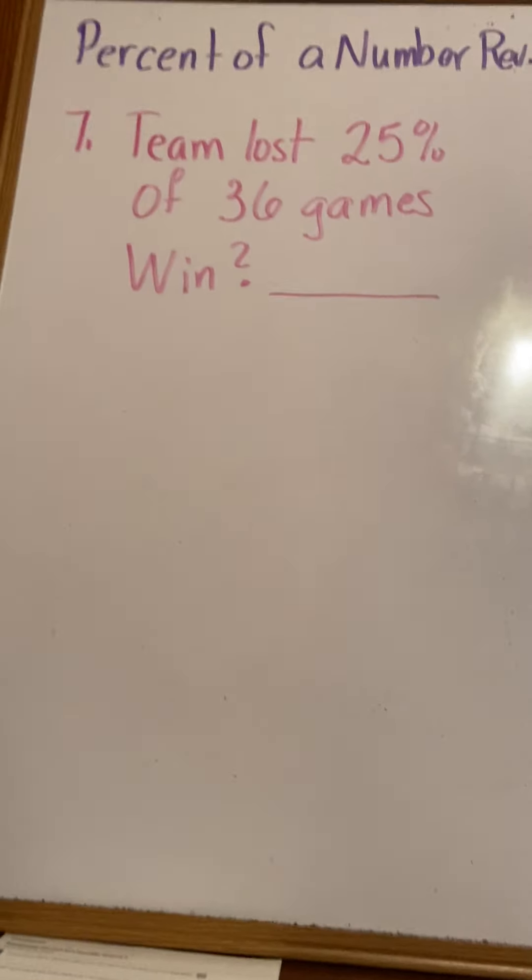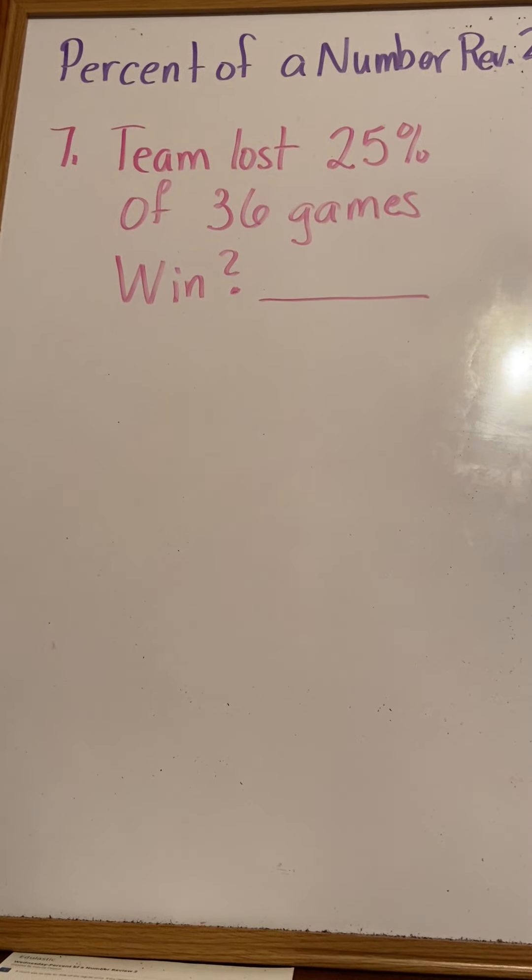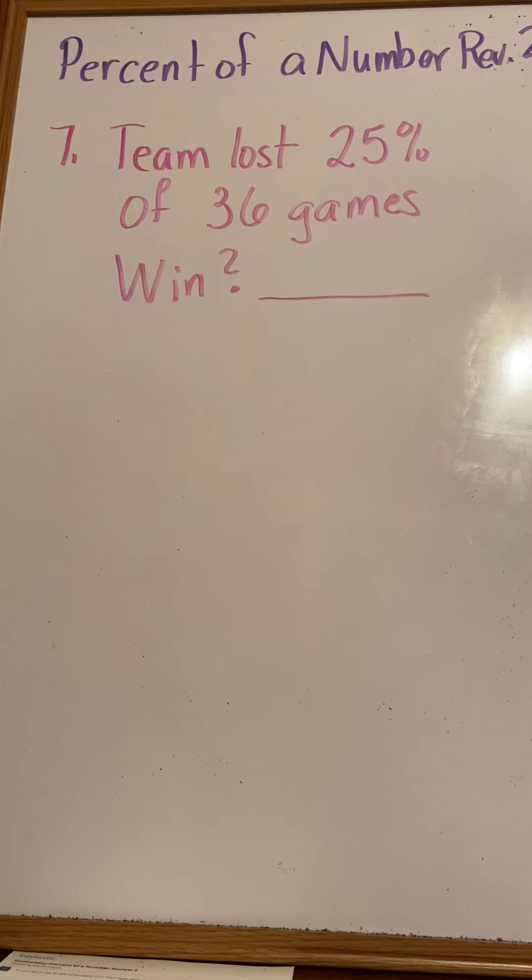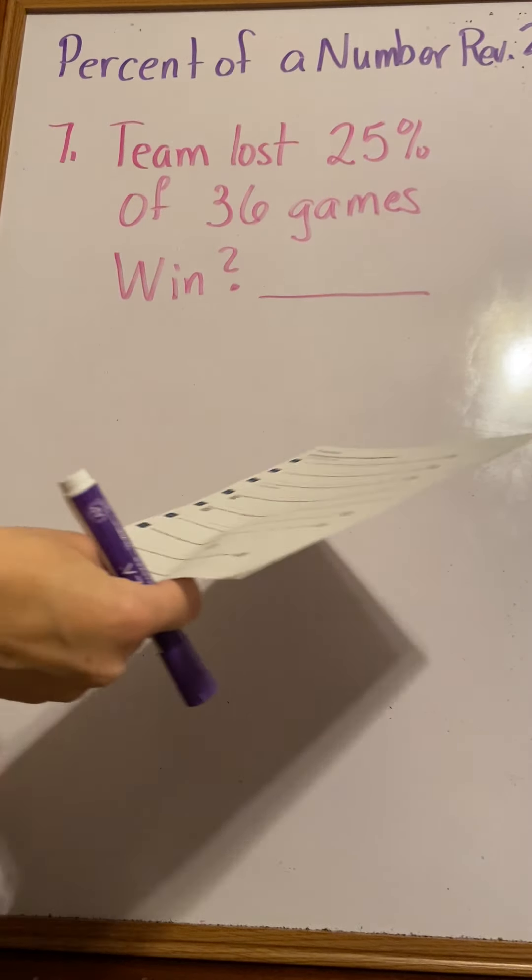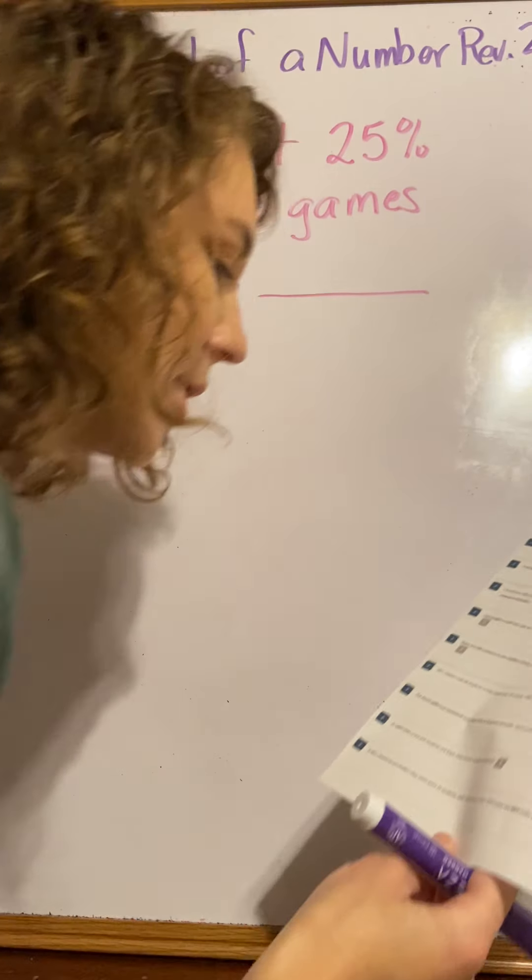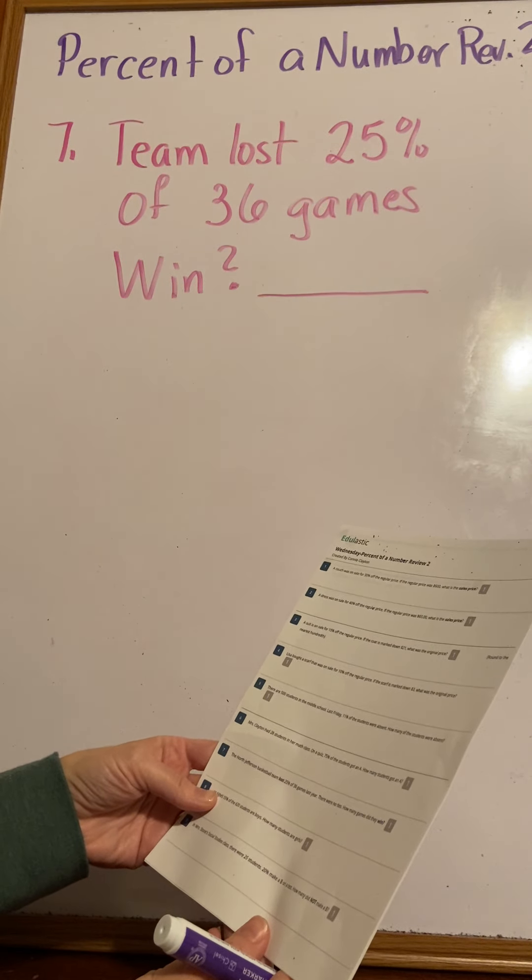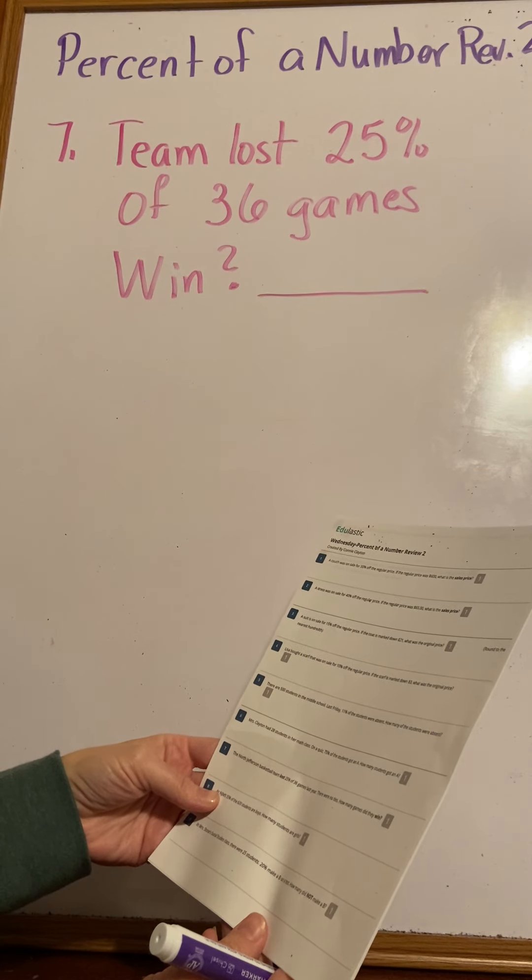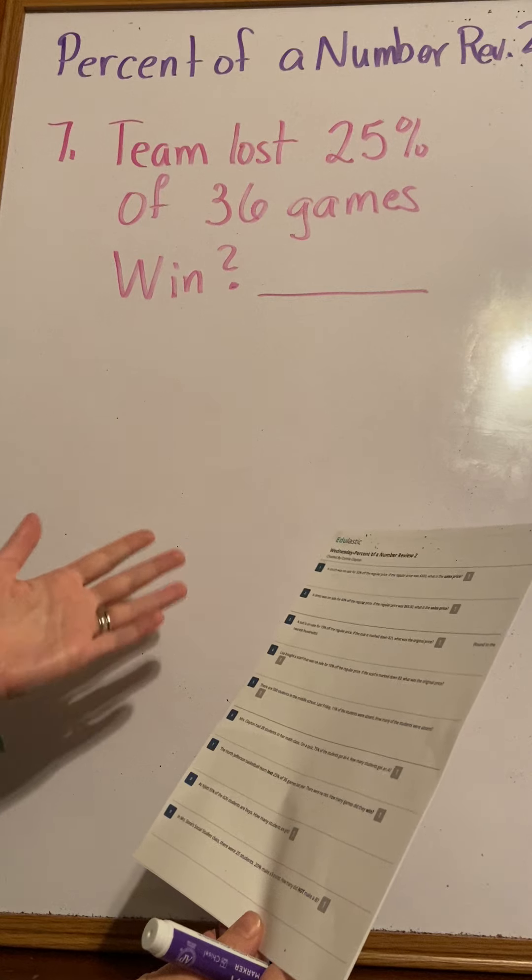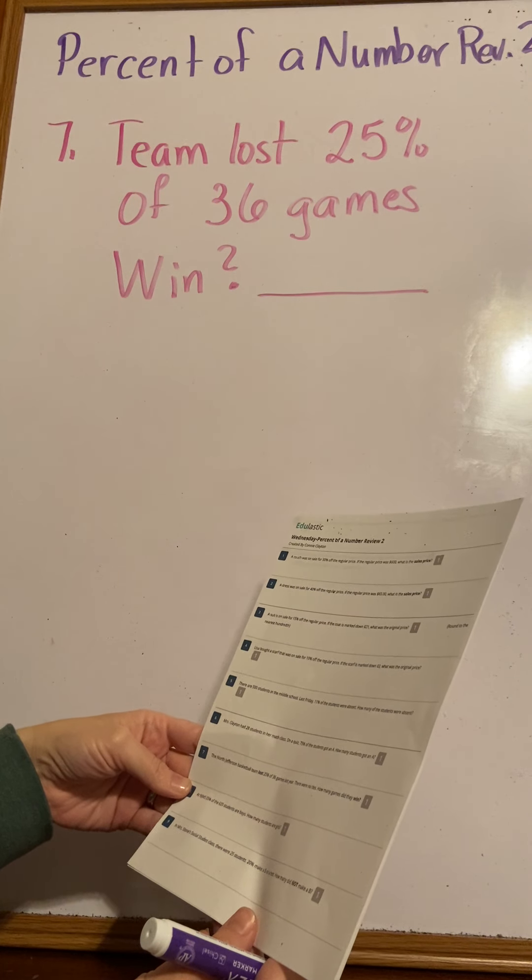Number seven. I thought seven might be a little tricky, so I made a video for it. It says the North Jefferson basketball team lost 25% of 36 games last year. There were no ties - that means nobody tied each other like it was 50-50 or something. How many games did they win?